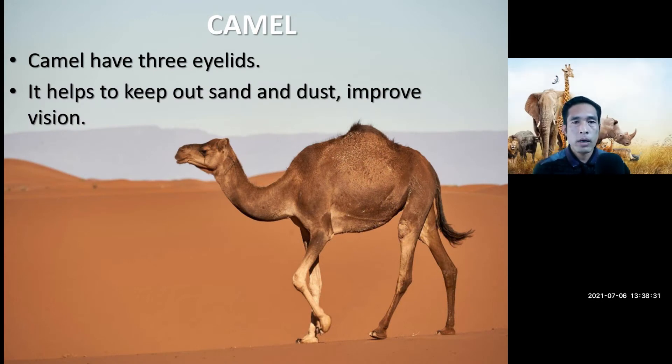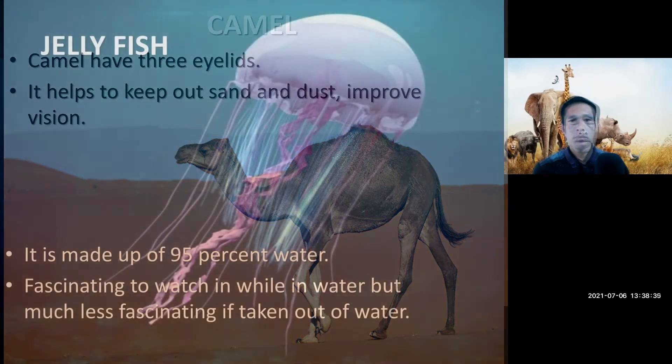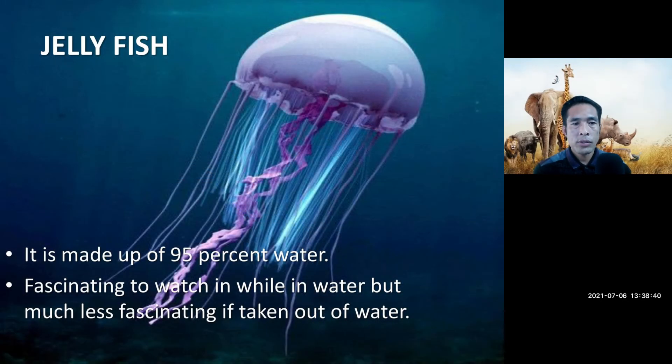The camel — of all creatures, camels have three eyelids. This helps to keep out sand and dust and also improves their vision. This is the jellyfish. Jellyfish is made up of 95 percent water.